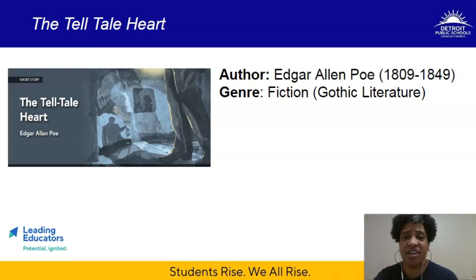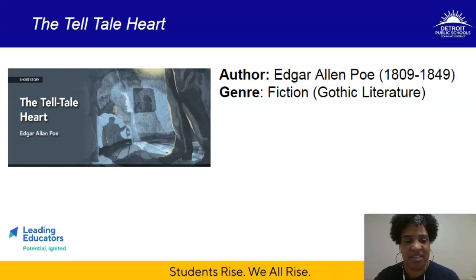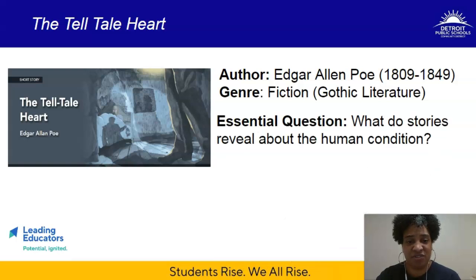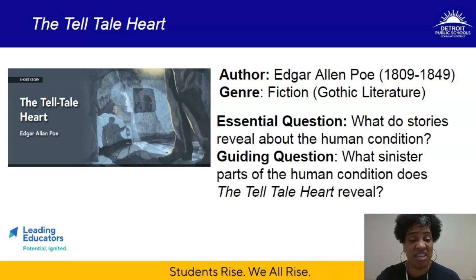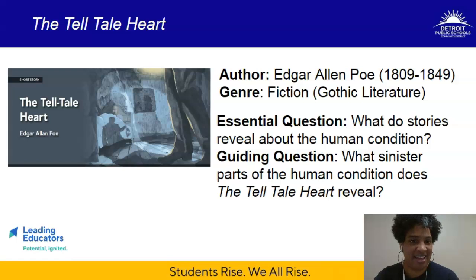A brief reminder: we're talking about The Telltale Heart, written by Edgar Allan Poe. It's a form of gothic literature, focused on horror and dark themes, and very much a psychological thriller as Poe was known for. Remember, it connects to our essential question for the unit: What do stories reveal about the human condition? Specifically, this text really gets at what sinister parts of the human condition The Telltale Heart may reveal. You've already wrestled with both of those questions, which has allowed you to unlock further meaning in the text.